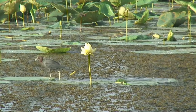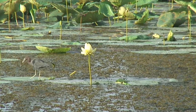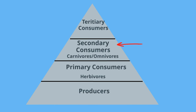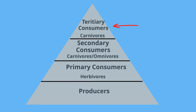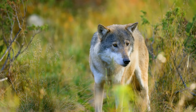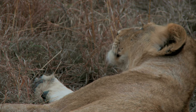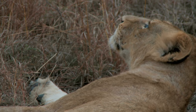Above the secondary consumers are tertiary consumers. Tertiary means third level. They consume secondary consumers, and this level includes carnivores. Examples would include wolves, lions, and this hawk.